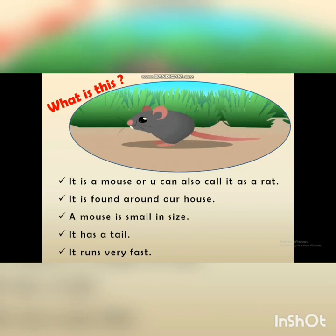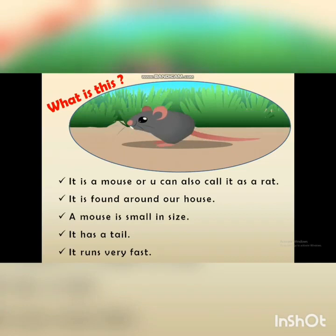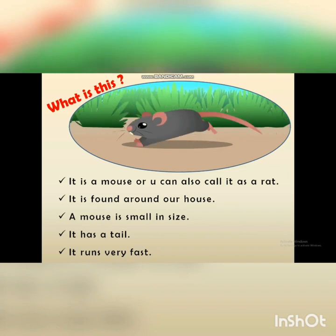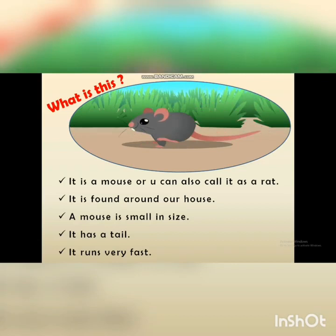What is this? Children, can you see on this slide there is a mouse who is jumping around in the field. This mouse is also called a rat. It is found mostly in our house. The size of the mouse is very small. It has a long tail and it runs very fast.